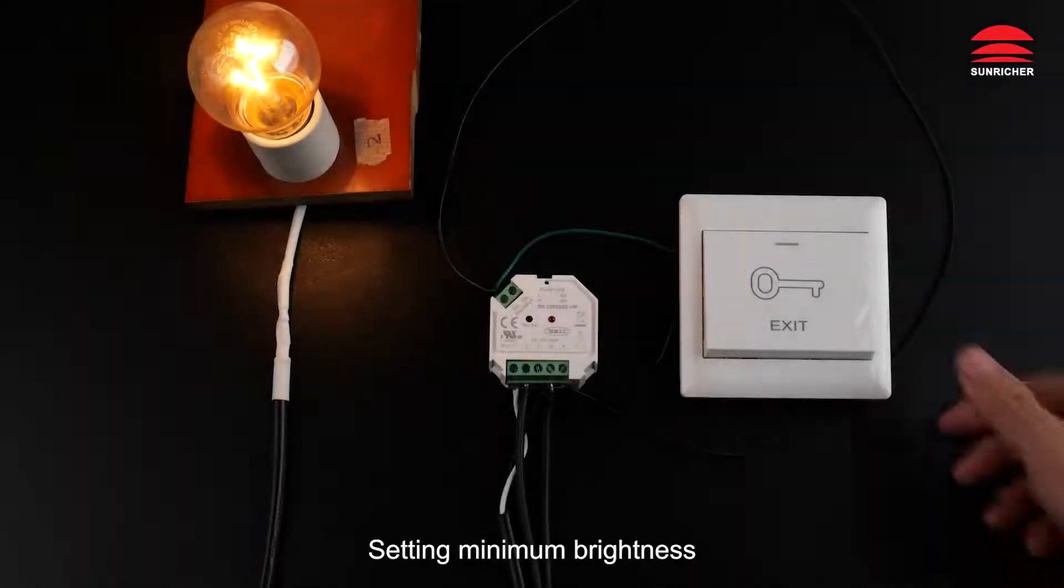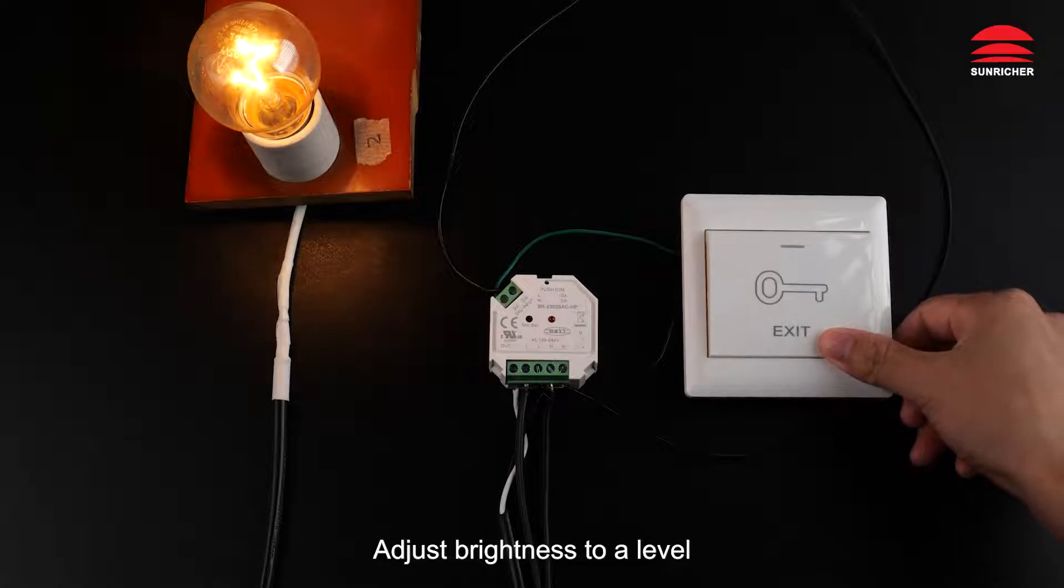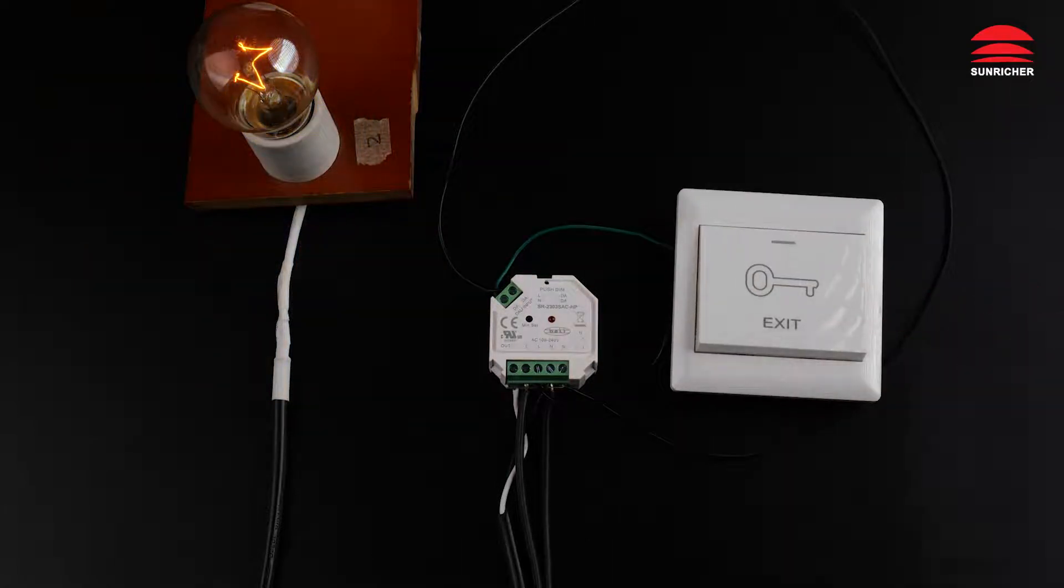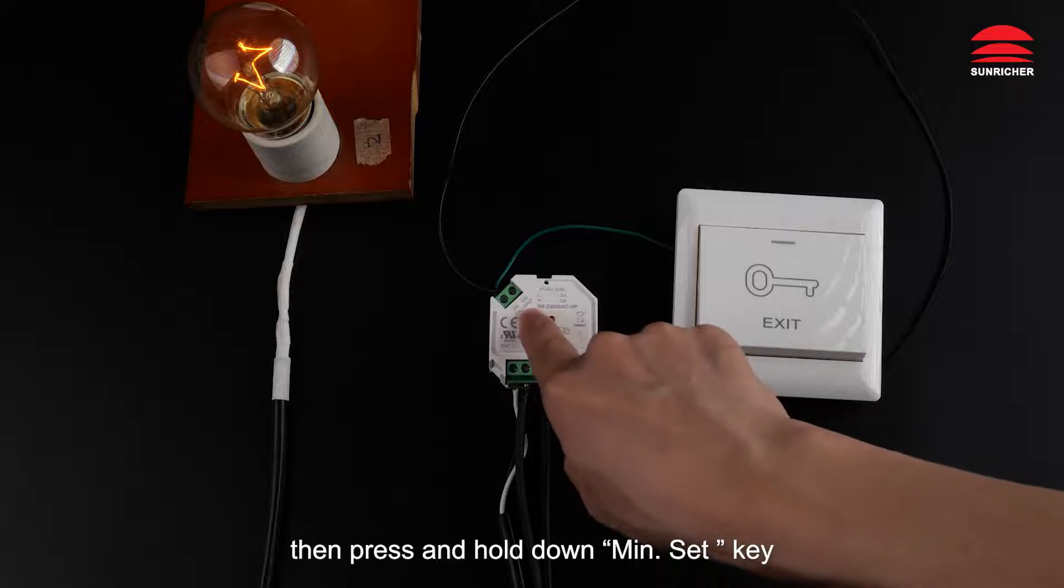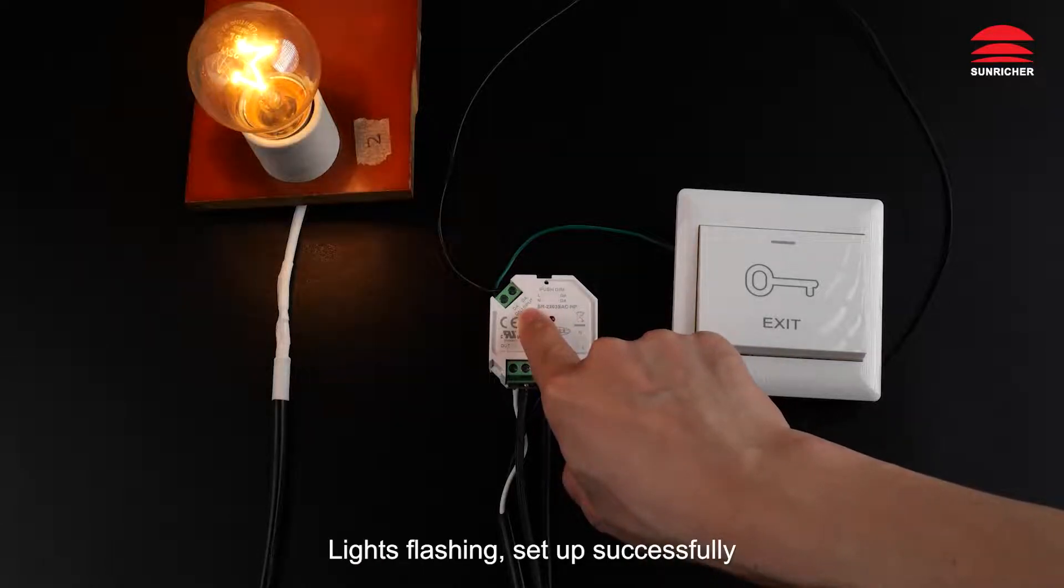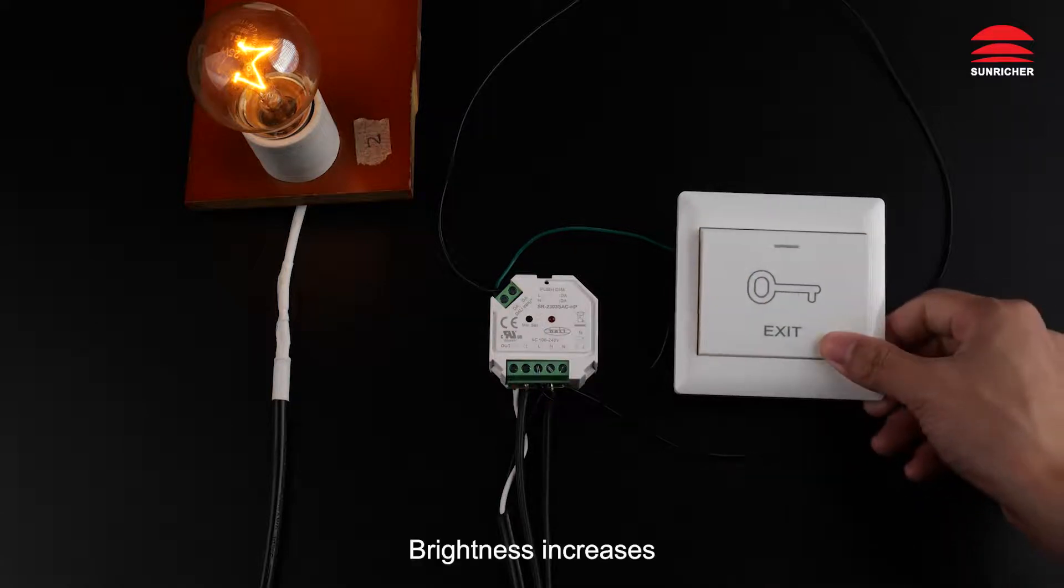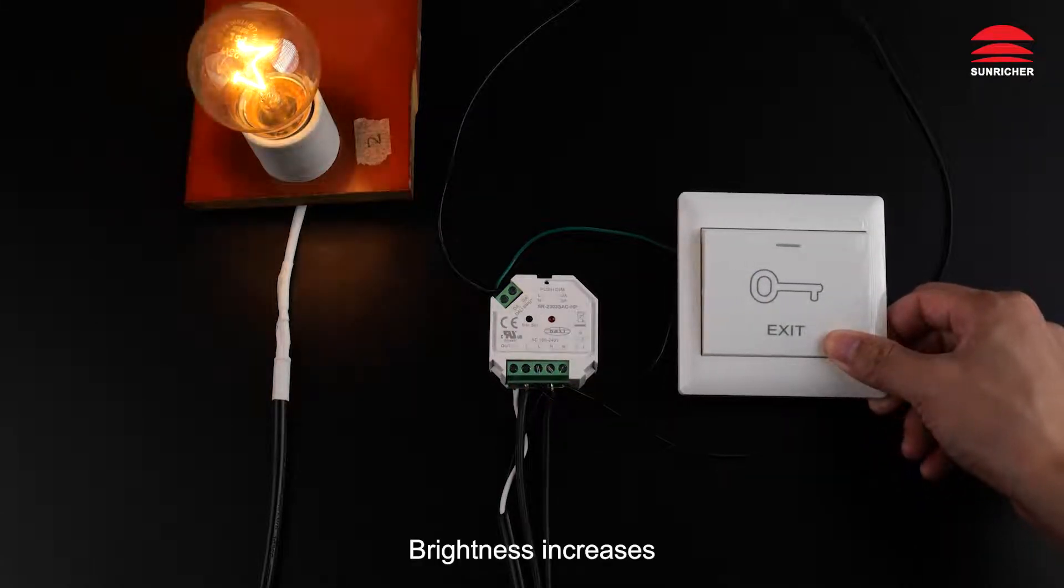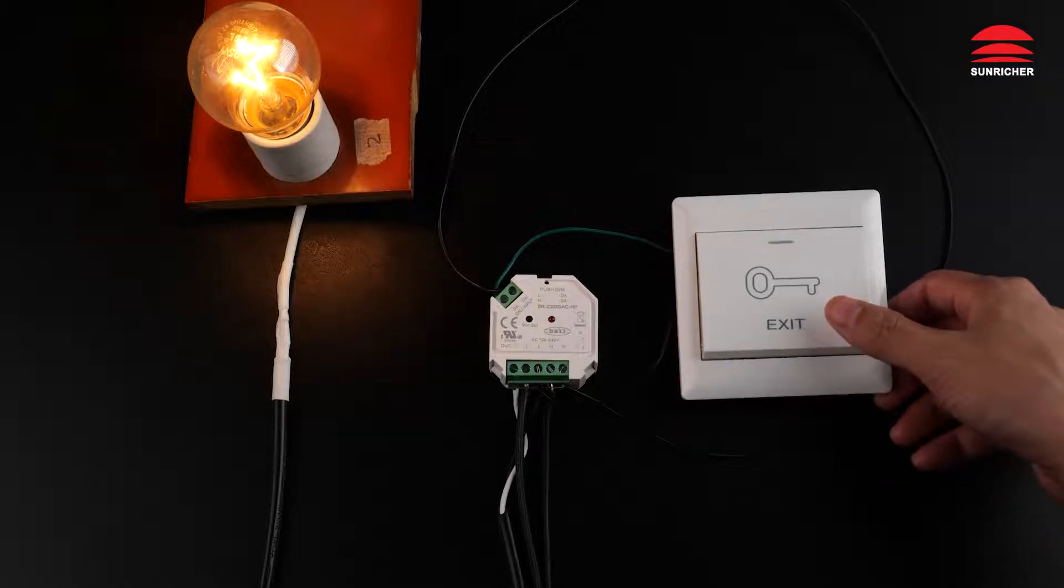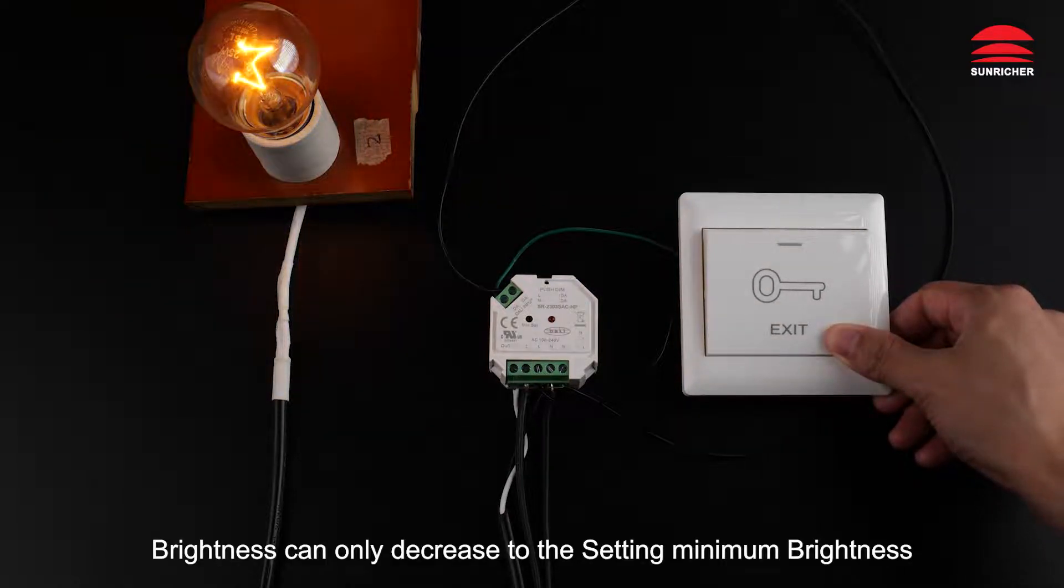Setting minimum brightness: adjust brightness to a level, then press and hold down the min set key. Lights flashing indicates setup successful. Brightness increases, but can only decrease to the set minimum brightness.